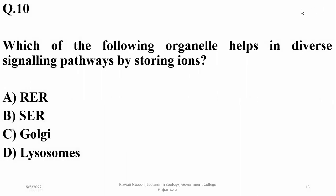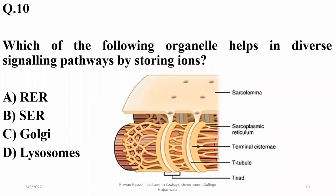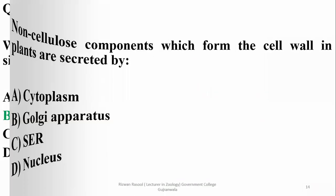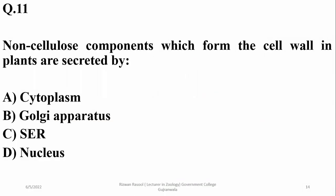Question 10: Which organelle helps in diverse signaling pathways by storing ions? Ion storage — specifically calcium ions — is primarily the function of smooth endoplasmic reticulum (SER). You can remember this using a muscle cell-based example. Right option is B (SER).